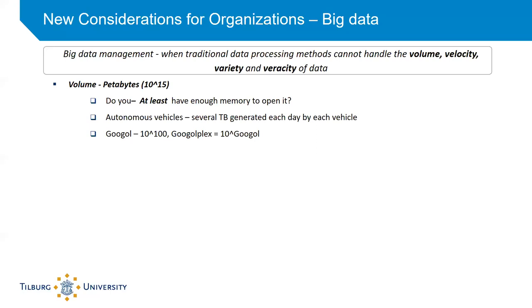Each autonomous vehicle generates terabytes of data each day from its various sensors. An interesting question is: how big can data get? This is not easy to answer because beyond a point, size becomes very conceptual. Take for example 10 to the power of 100 — while it is easy to represent on paper, conceptually it's a very, very large number. It in fact exceeds the total number of atoms in the universe. This number is known as a googol. In fact, the organization Google originally intended its name to be googol, but due to a spelling mistake, googol became Google.